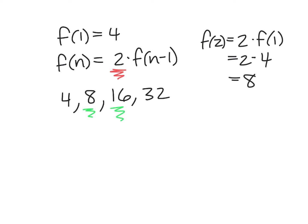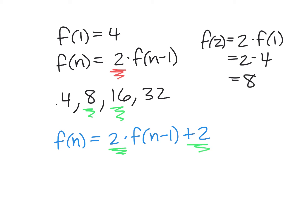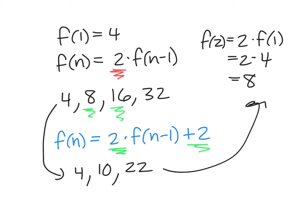We can make the formula more complex: F of N equals 2 times F of N minus 1 plus 2 — now we have two operations, multiply by 2 and add 2. Starting with 4: 4 times 2 is 8, plus 2 is 10. Then 10 times 2 is 20, plus 2 is 22. You can plug values in independently to work them out.